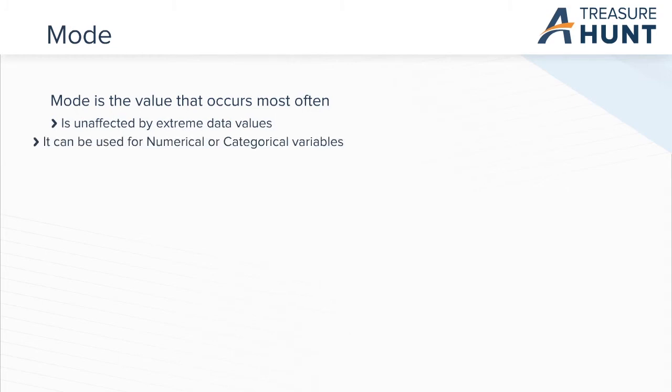The next measure is mode, the value in a data set that occurs the most often. This measure of central tendency is not affected by extreme values and is applicable to both numerical and categorical values.